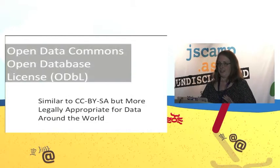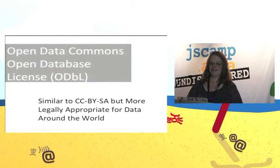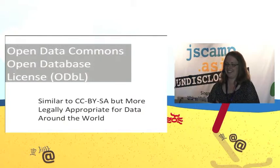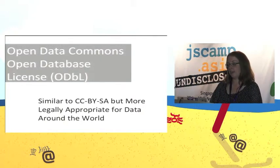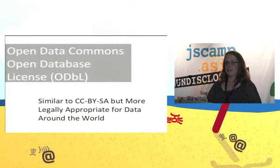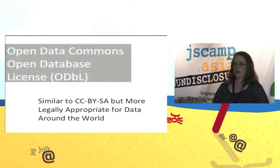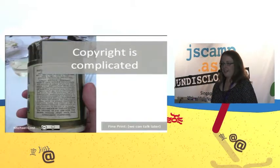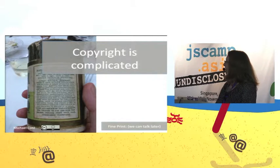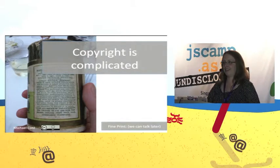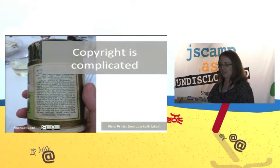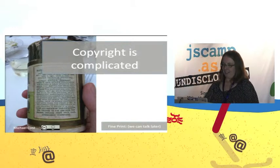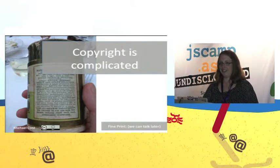Quick legalese: OpenStreetMap is openly licensed under the Open Data Commons Open Database License. It's basically like CC BY-SA, but appropriate for data since data is not a creative work. Summary: copyright is complicated. If you want to discuss it later, I'm happy to — but the rest of you probably don't want to hear it in this presentation.